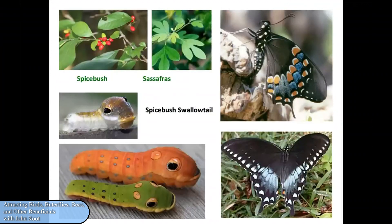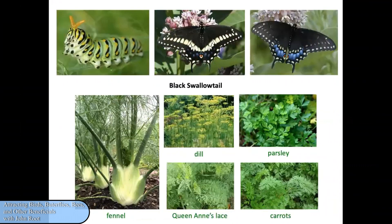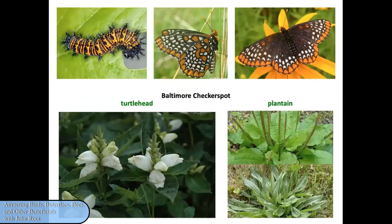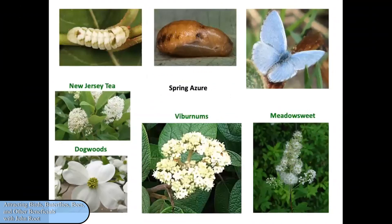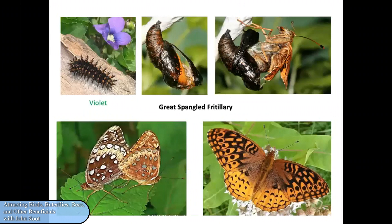Here's a spicebush swallowtail and its cute little caterpillars that have fake eyes painted on the sides of their heads to intimidate predators. Only two plants can host these caterpillars — spicebush and sassafras — so the female has to lay her eggs on one or the other. Black swallowtail females look for something in the fennel family — dill, parsley, Queen Anne's lace, or carrots — to lay their eggs. The host plants for Baltimore checkerspot are turtle head and plantain, which are common weeds in our landscapes. Spring azure caterpillars can eat New Jersey tea, viburnum leaves, meadowsweet, or dogwoods. The host plant for great spangled fritillary and other fritillaries is none other than common blue violet.